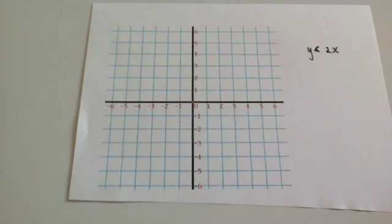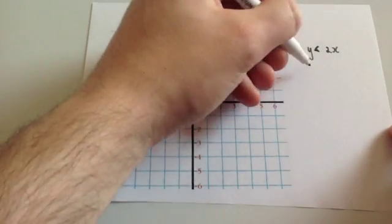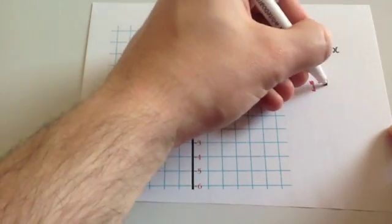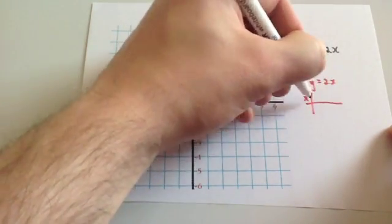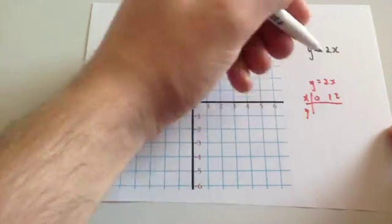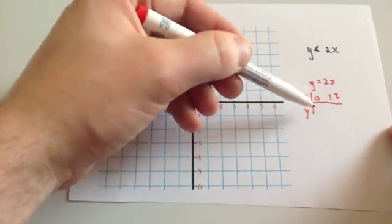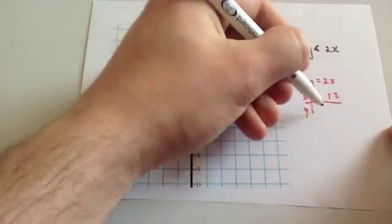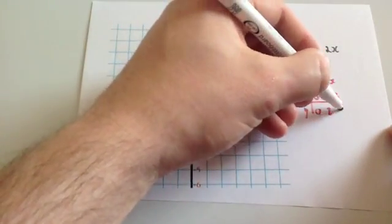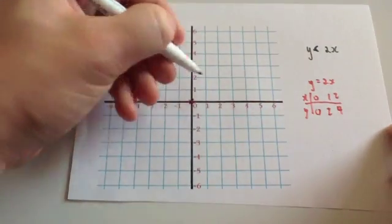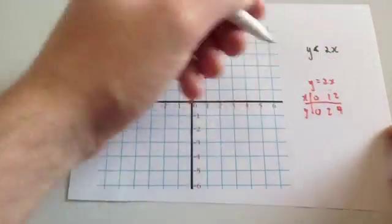Now we've been asked to draw the inequality y is less than 2x, so let's consider the graph y equals 2x. Drawing a table for x, y: 0, 1, 2. The y value is equal to 2 times the x value — so 2 times 0 is 0, 2 times 1 is 2, and 2 times 2 is 4. So the coordinates are (0,0), that's the origin, (1,2), and (2,4).